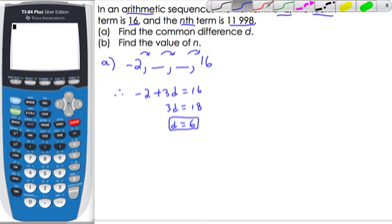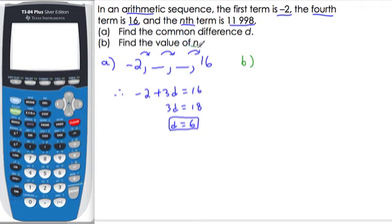In part (b), we are asked to find the value of n. We now know that the nth term, 11,998, equals, from the formula booklet, the first term, negative 2, plus n minus 1.